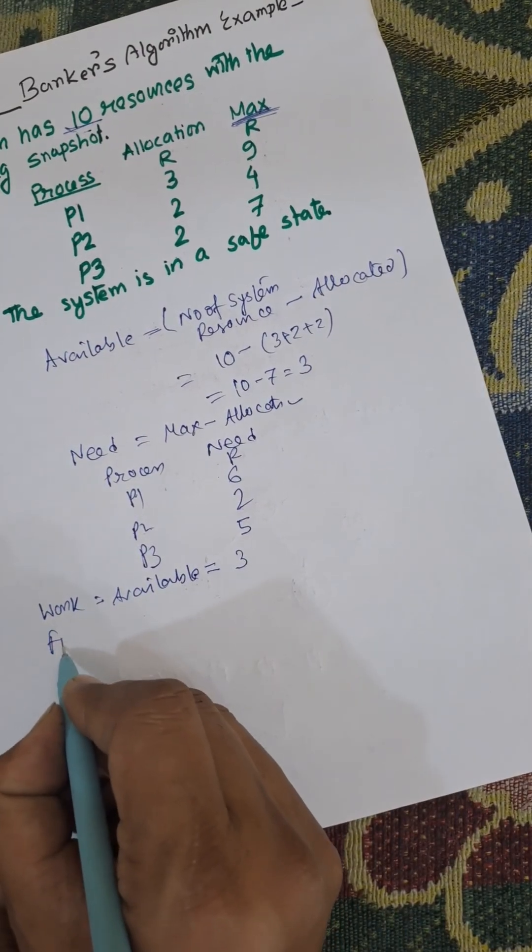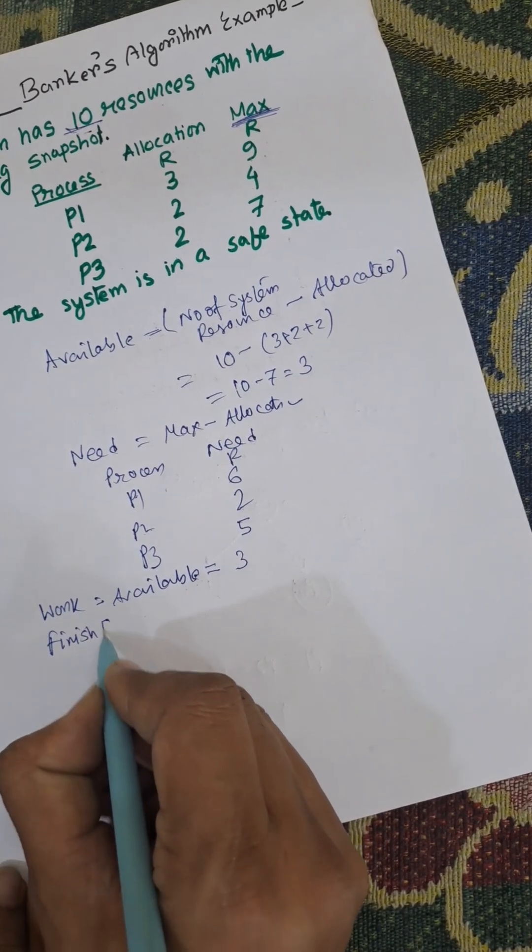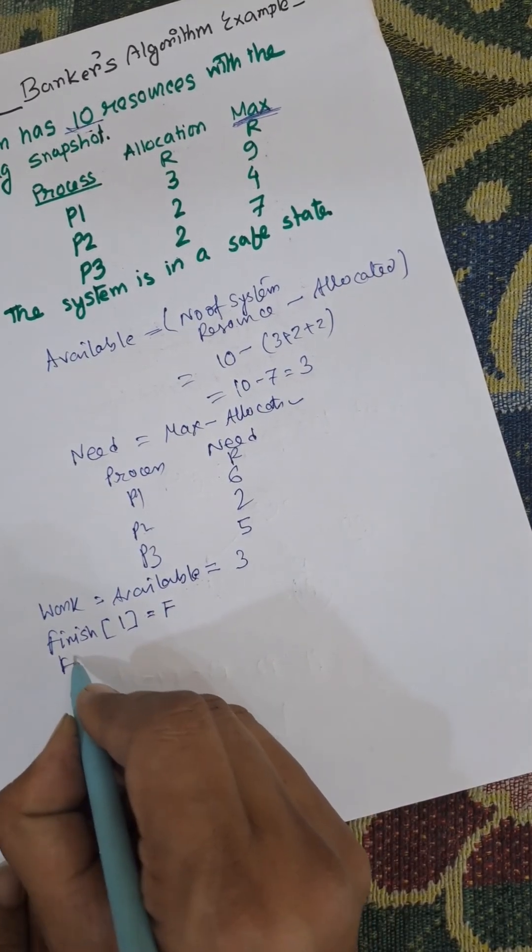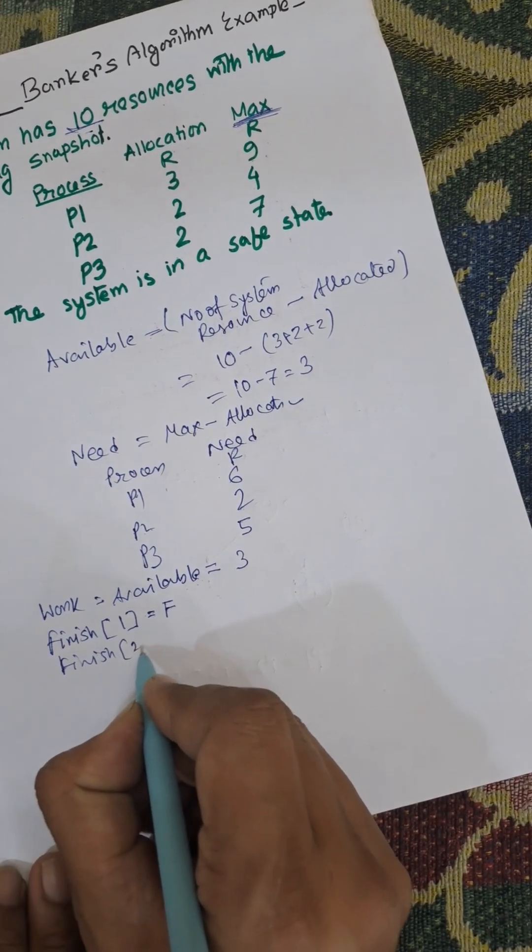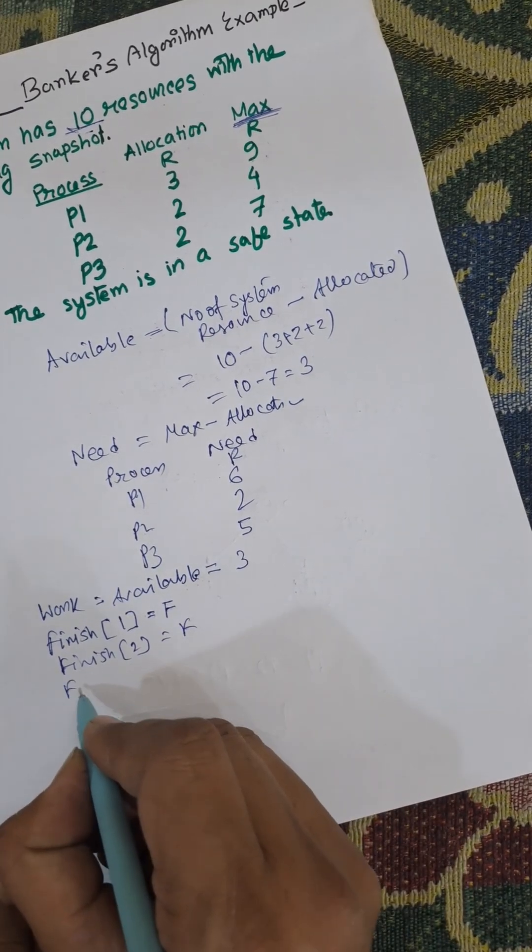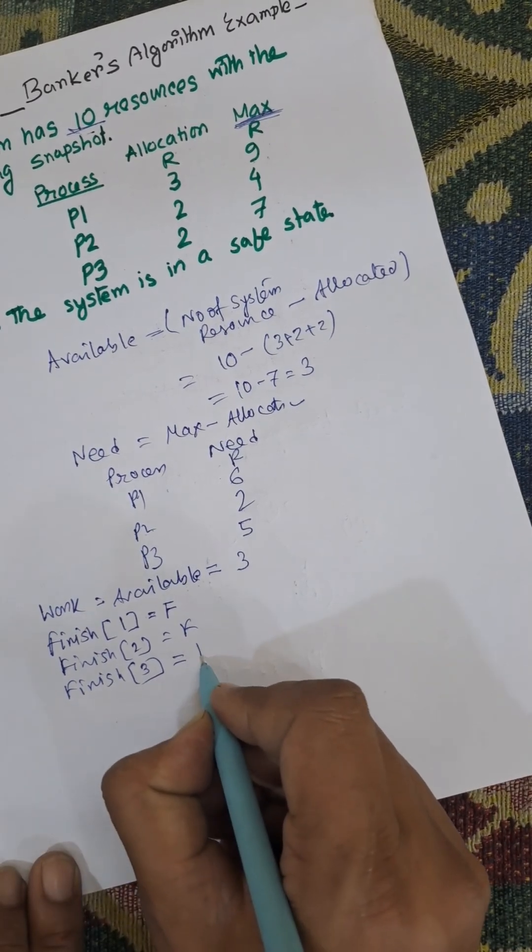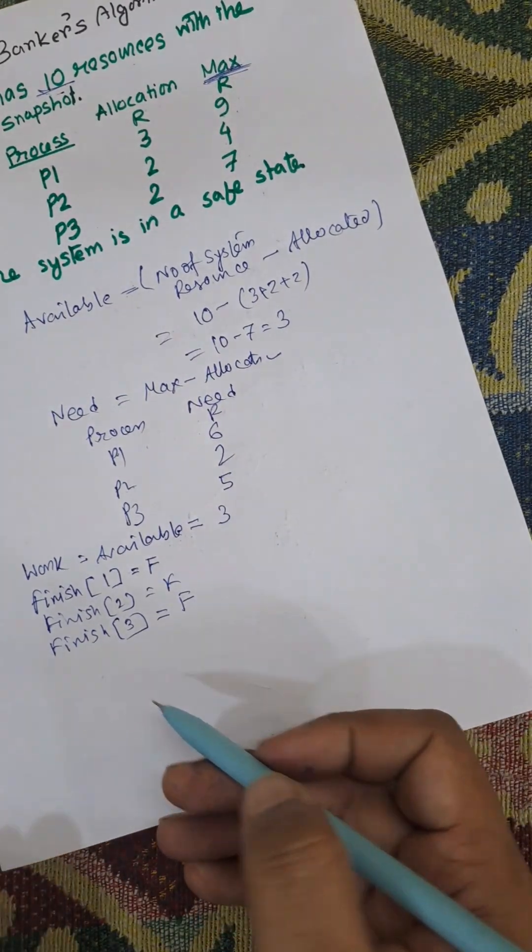And finish, there is a finish vector. Finish 1 equals false, Finish 2 equals false, Finish 3 equals false. Finish is a vector to indicate whether the process finishes the execution or not. Initially it is false, false, false.